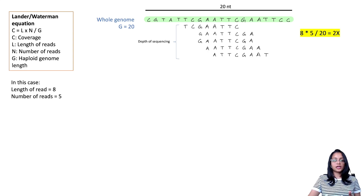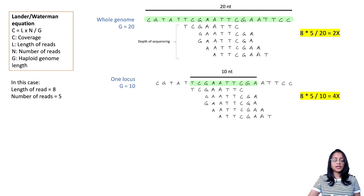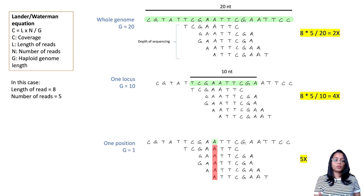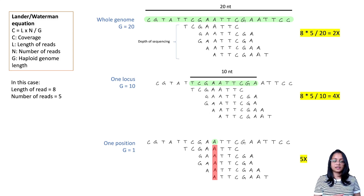If you're calculating coverage for one locus or region, you can still use the Lander-Waterman equation with the length of that region. For a 10-nucleotide locus in our example, the coverage is 4x. And when calculating coverage for a single nucleotide position, you simply count the number of reads overlapping that position — in this example, the position of interest has a coverage of 5x.